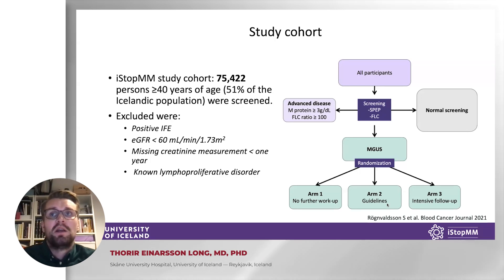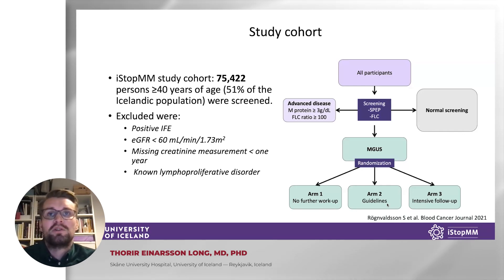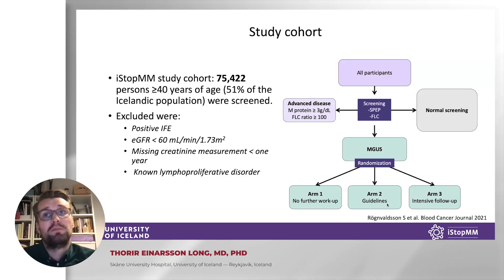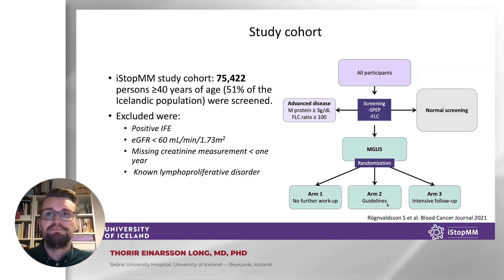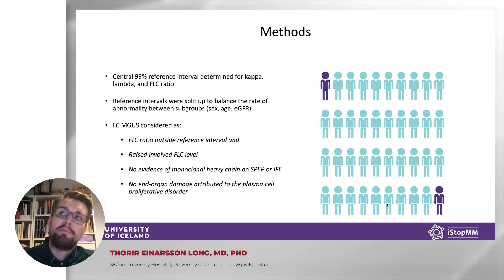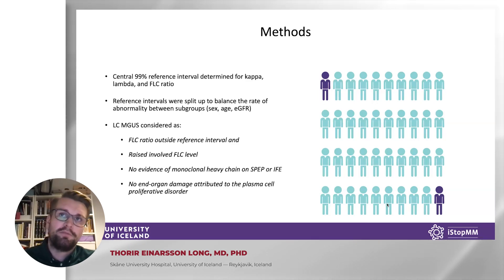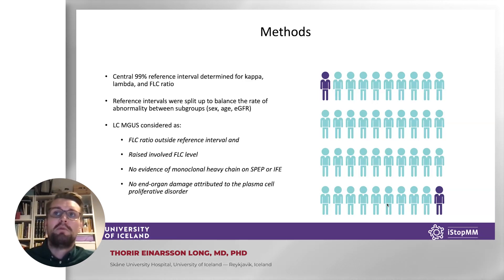The persons with MGUS were then randomized into three arms. Arm 1 was unaware of MGUS status and continued regular care. Arms 2 and 3 were called into a clinical study center for further evaluation and follow-up, including bone marrow sampling of non-low-risk MGUS in Arm 2 and everyone in Arm 3. In the reference interval part of this study, we excluded all with positive immunofixation for M protein, eGFR below 60, missing creatinine measurements, or unknown lymphoproliferative disorder before or at screening. We determined central 99% reference intervals for kappa, lambda, and the FLC ratio, stratified by age, sex, and eGFR. We considered light chain MGUS as an abnormal FLC ratio with simultaneously abnormally high involved FLC, without evidence of M protein on immunofixation or end organ damage due to a plasma cell disorder.